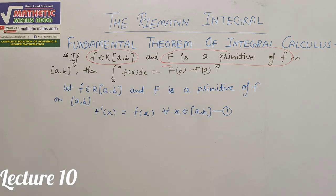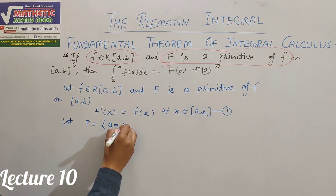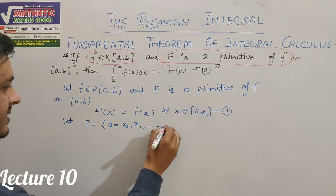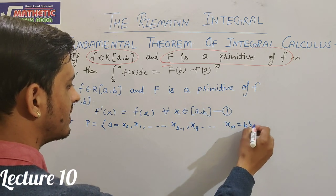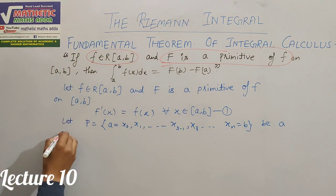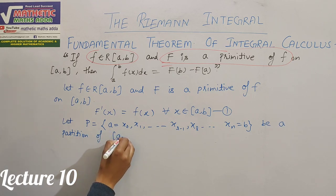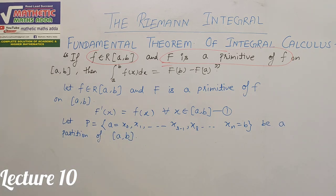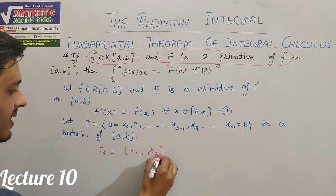Let P = {a = x₀, x₁, ..., x_{r-1}, x_r, ..., x_n = b} be a partition of the closed interval [a, b]. For the r-th sub-interval, the values will be x_{r-1} and x_r.